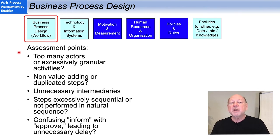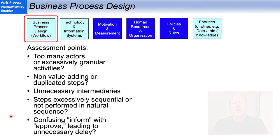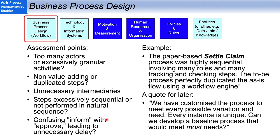For business process design, here are some of the points I typically use when assessing the process. One to focus on is confusing 'inform' and 'approve' — we often see a step where somebody only needs to be informed treated as an approval step, so the process stops until they release the work to carry on. An example was a paper-based settle-claim process at a well-known insurer that was highly sequential, with many rules and verification steps. They wanted to improve it by implementing an image-based workflow engine, but management dictated no process change. So the to-be process perfectly duplicated the totally sequential as-is flow, ensuring they got no benefit from implementing that workflow engine.